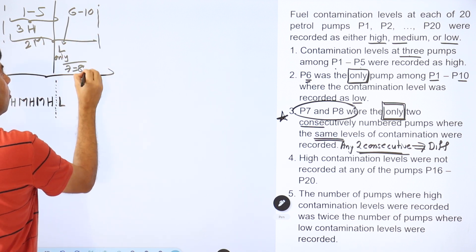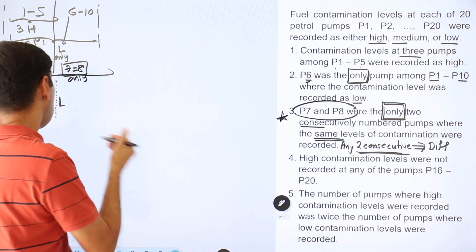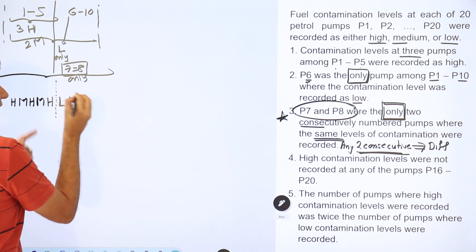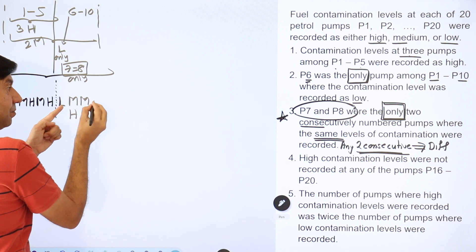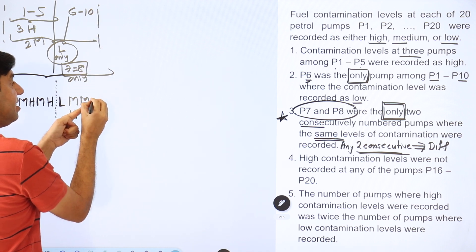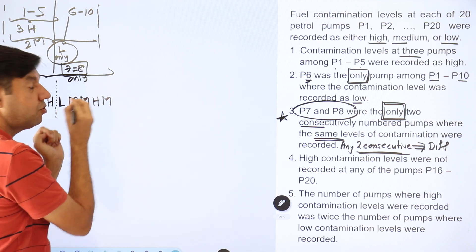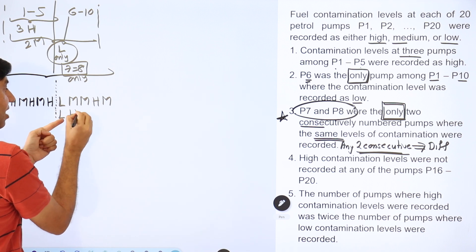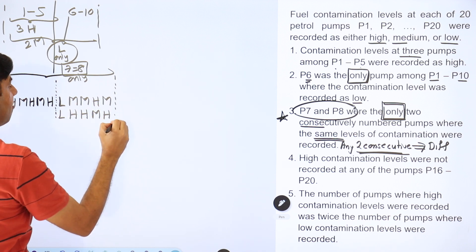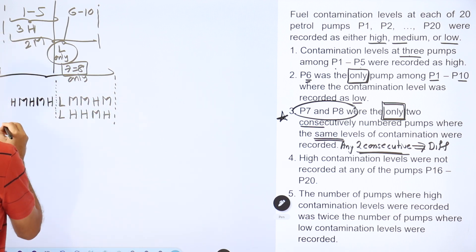P7 has to be different from P6. It could be medium or high, so I'll put a choice. P7 gets repeated at P8. Then P9 cannot be the same — it can't be L (the only L is P6), so it has to be H. Then P10 has to be M — you can't put H again and can't put L. So pumps 1 to 5 have a unique possibility; pumps 6 to 10 have two possibilities.